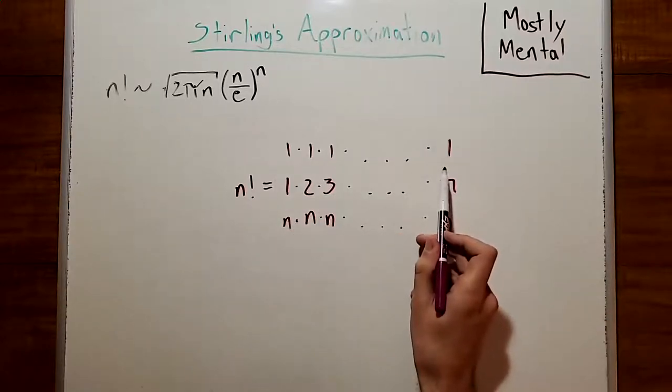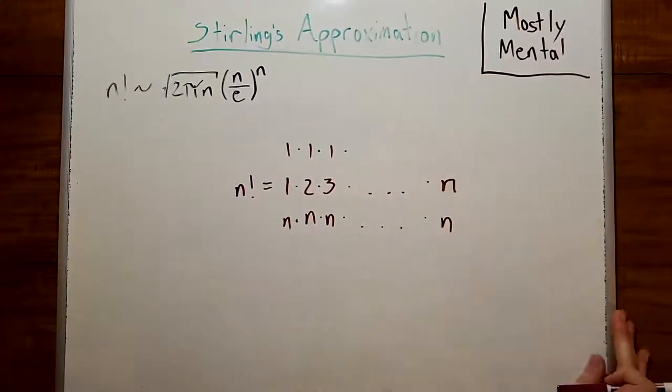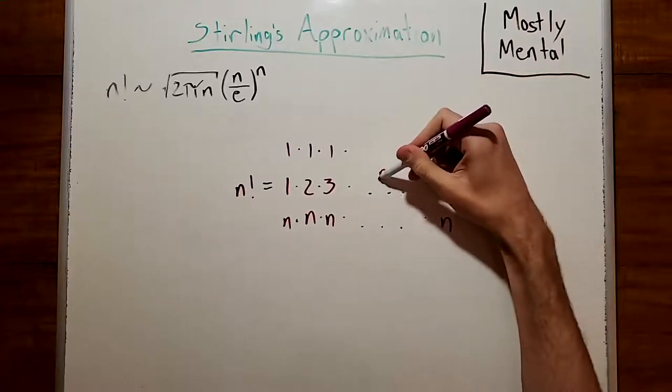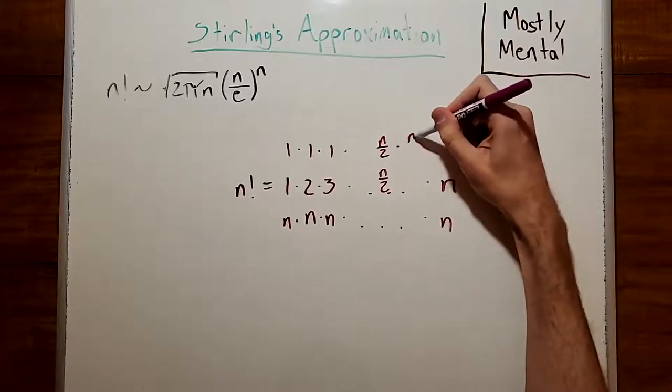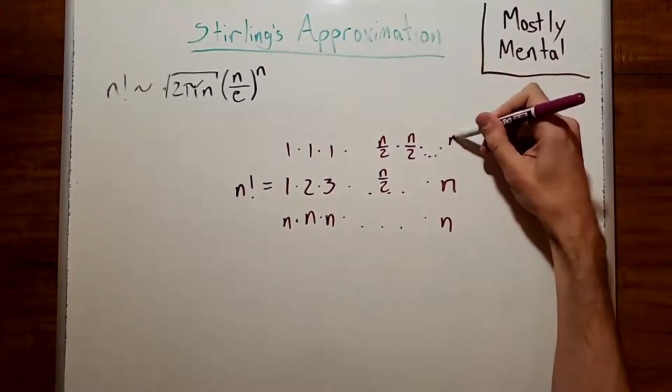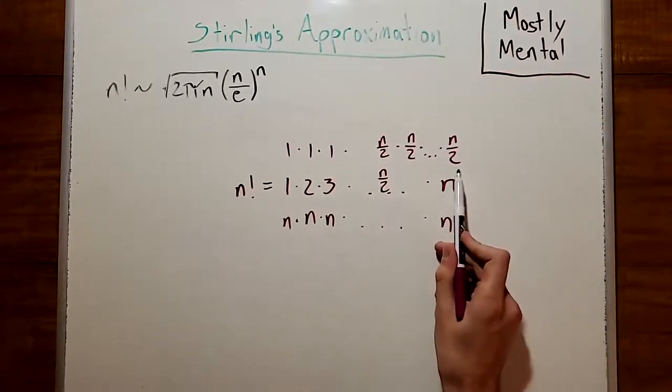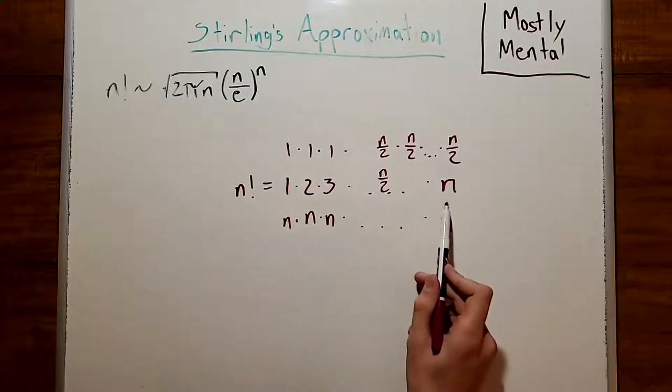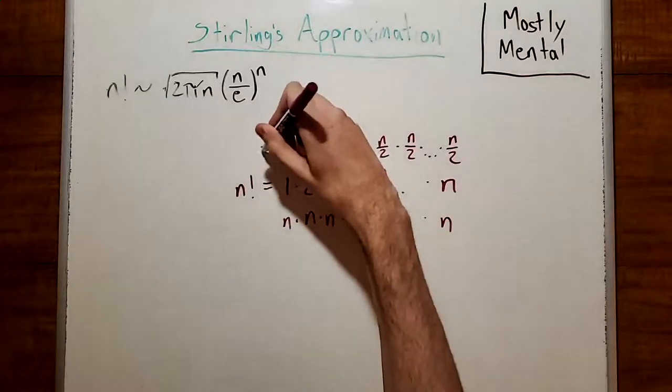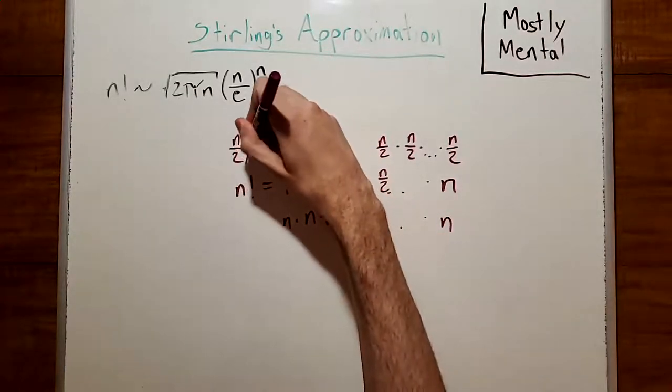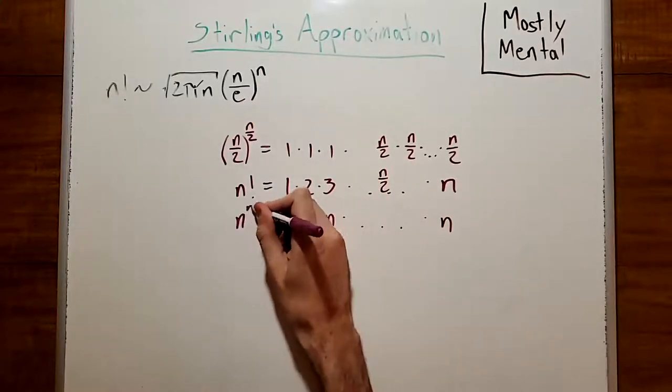Actually, this lower bound is pretty terrible. This is just going to give us 1, so we can do a bit better than that. If we notice, starting at n over 2 here, all of these terms are going to be at least n over 2. And so, if we replace all of those with n over 2, n factorial is still going to be larger. So, this product here is going to give us n over 2 to the n over 2. And this one here, of course, since there are n terms, is n to the n.